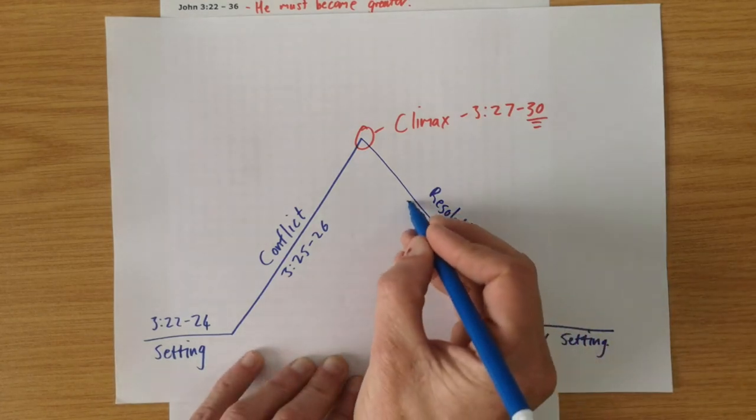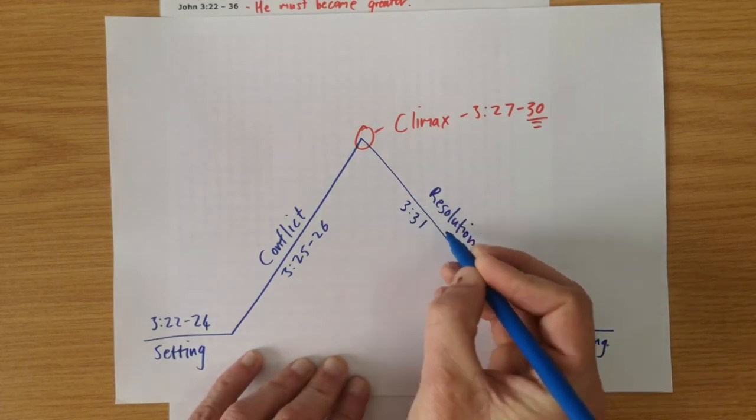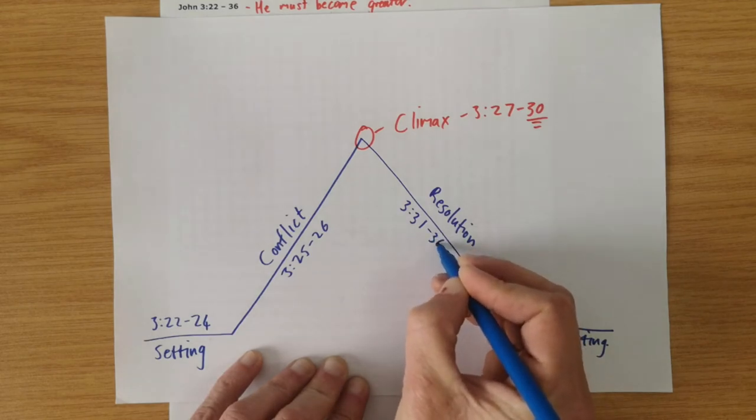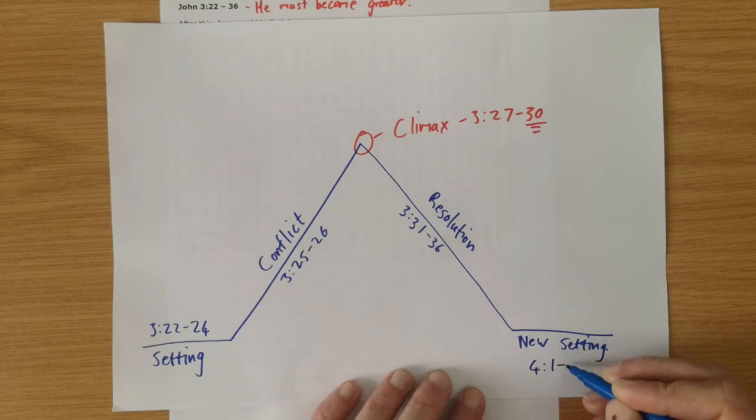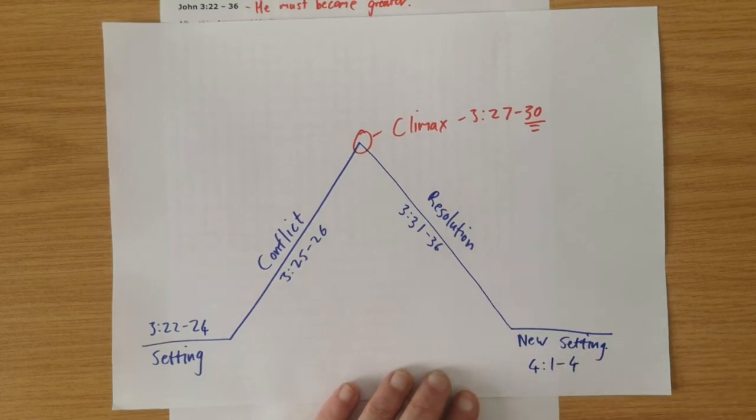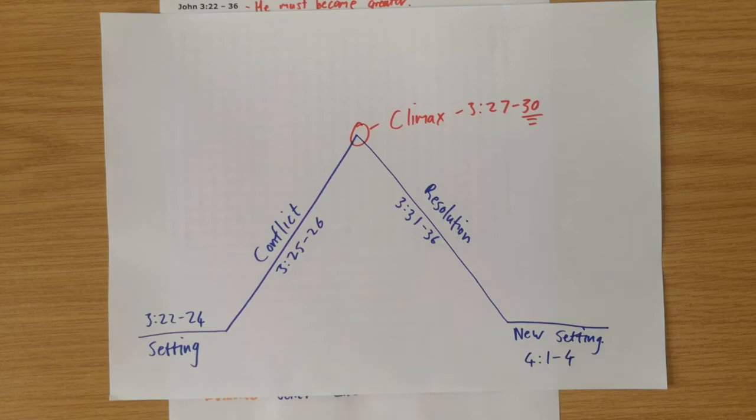Then the story resolves from verse 31 to the end, verse 36, as the Baptist then shows why Jesus must become greater. And it's because he is already greater. And then the new setting is given in chapter 4, verse 1 to 4, where the Pharisees are introduced and this opposition to Jesus grows. And so Jesus moves to a new place through Samaria, which is the setting for our next story.